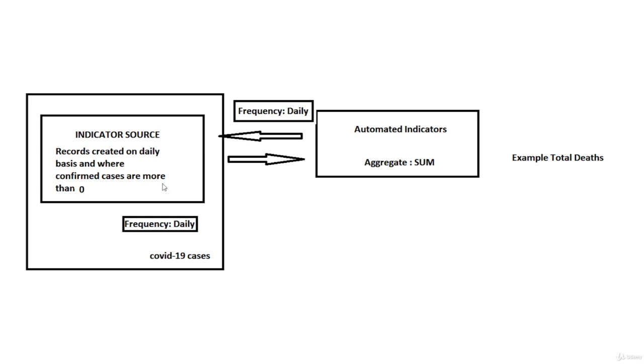The second one is the automated indicators. The automated indicators are the ones which will help you to calculate some specific results, such as the total number of death cases, confirmed cases, or recovered cases.